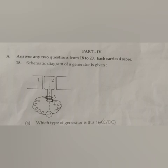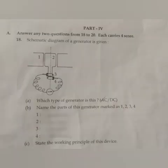Question 18: A schematic diagram of a generator is given. (a) Which type of generator is this, AC or DC? Answer: AC. (b) Name the parts of this generator marked as 1, 2, 3, 4. Answer: 1 - field magnet, 2 - armature coil.